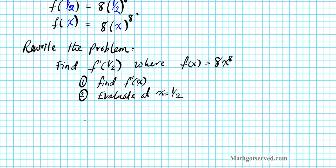So let's go ahead and find the derivative first. So f of x is 8x to the 8th power. So using the power rule, f prime of x is going to be 64x to the 7th power. So we're done with step 1 which is to find the derivative.